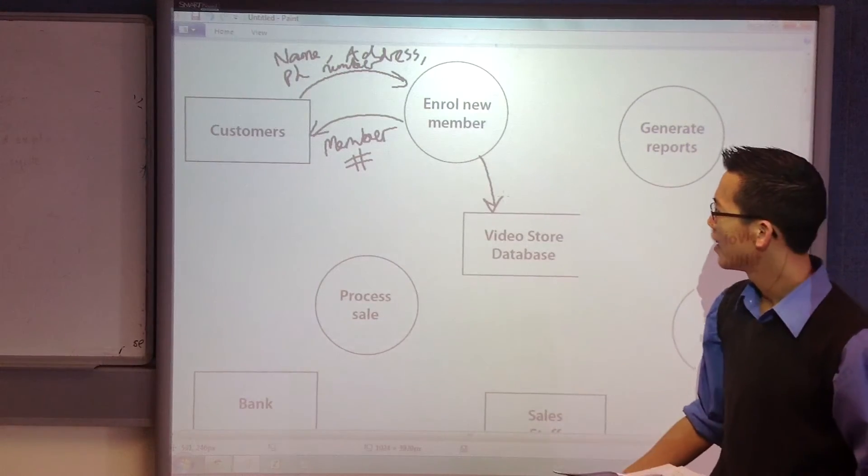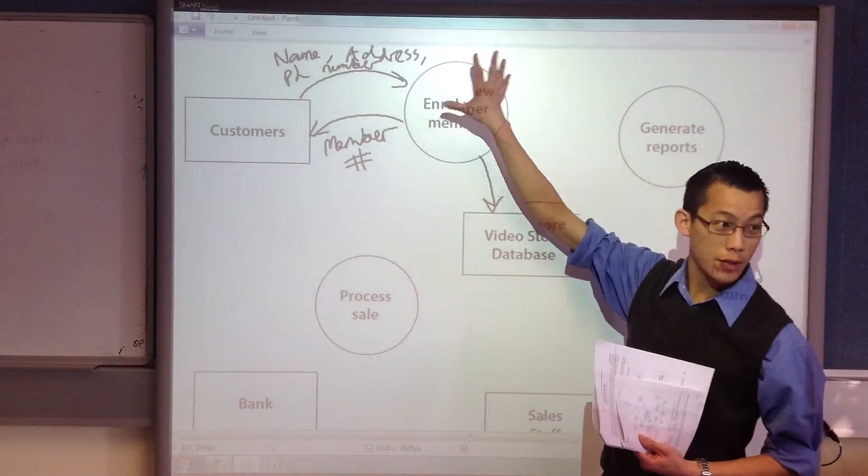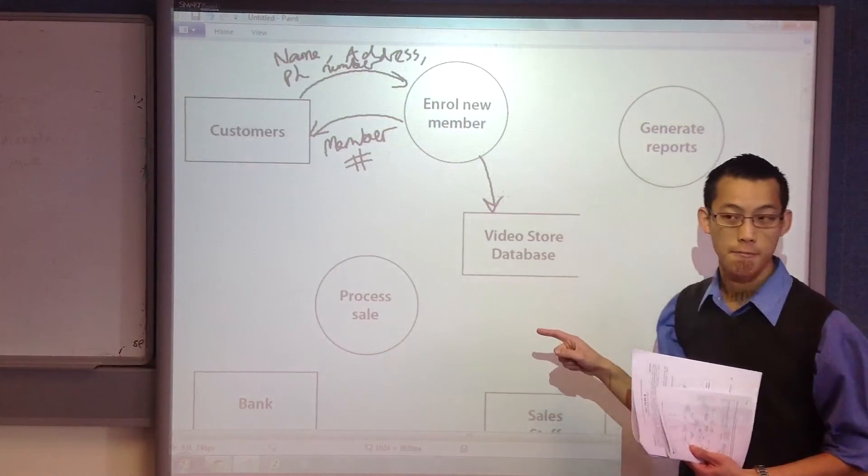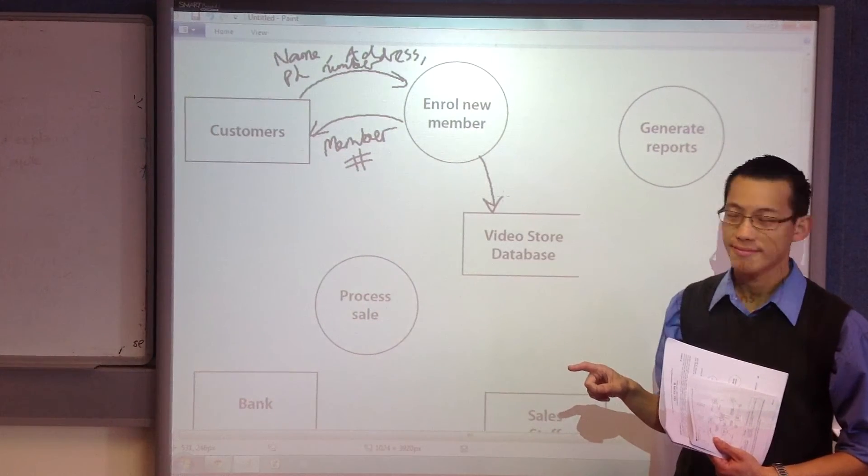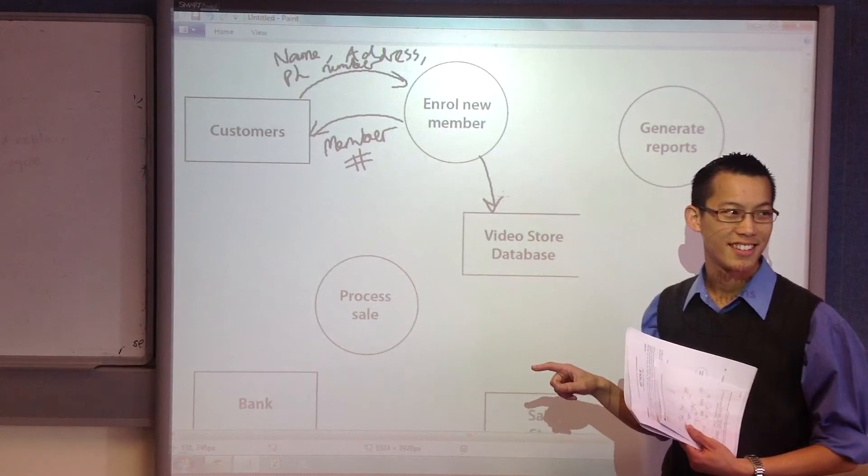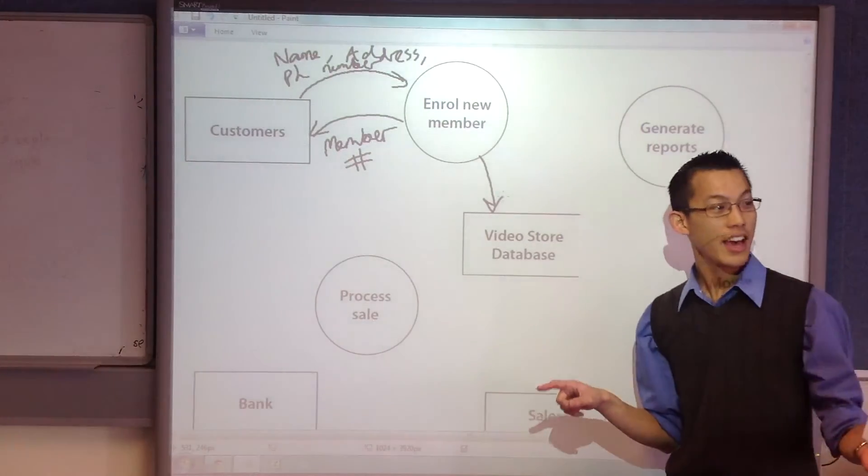What kind of things would you put there? Well, I'll pose that to you. What kinds of things are going to go from this process and get stored long-term in that central database? What do you think? Any takers? What do you think, Raymond? The ID as well as the name and the address. Yeah, good.